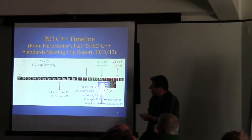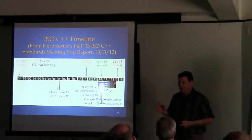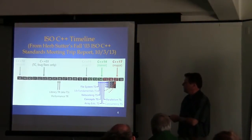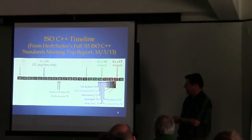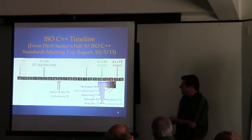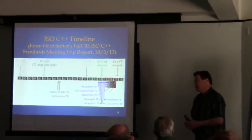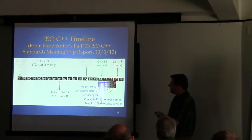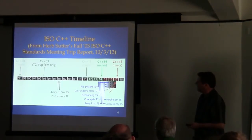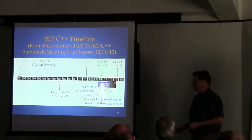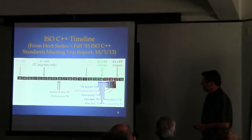Right around 2003, C++03 came along — essentially a trivial bug-fix update. The most significant thing to happen officially in this whole period was the release of the library TR, known as TR1. TR1 introduced a whole bunch of new library features that were eventually going to be in C++11. In C++11, those features were finally made official, and the TR1 facilities were recoded using C++11 language features, making them more efficient with more functionality.